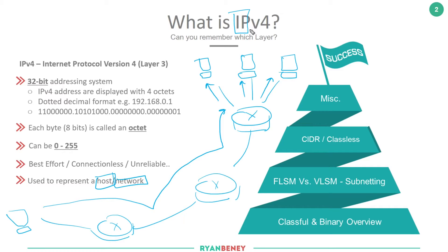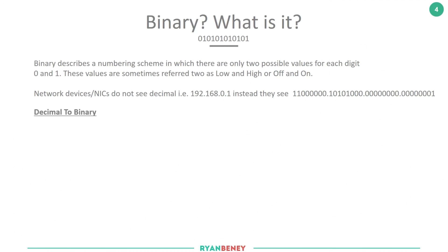It's almost like your house address — your street is your network, and which house you are on that street is your host portion. Next we're going to have a discussion around binary. Binary is essentially what our PCs see, whereas we would see it as decimal.